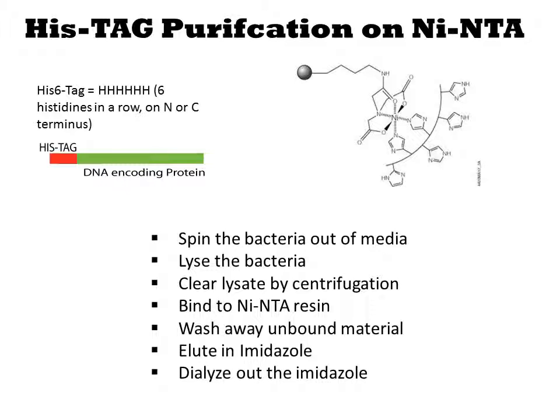The workhorse method is HISTAG. The sequence his-his-his-his-his-his on the N or C terminus of a protein is the HISTAG. This short sequence of amino acids binds to nickel ion. After immobilizing nickel in a column using the ligand NTA, you can affinity purify proteins with this tag.